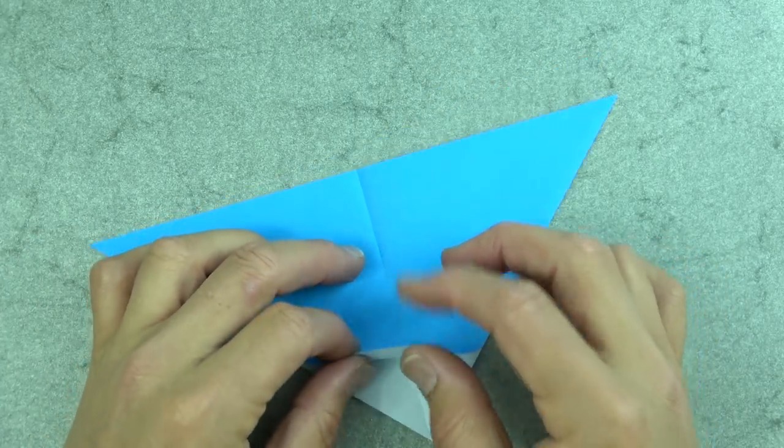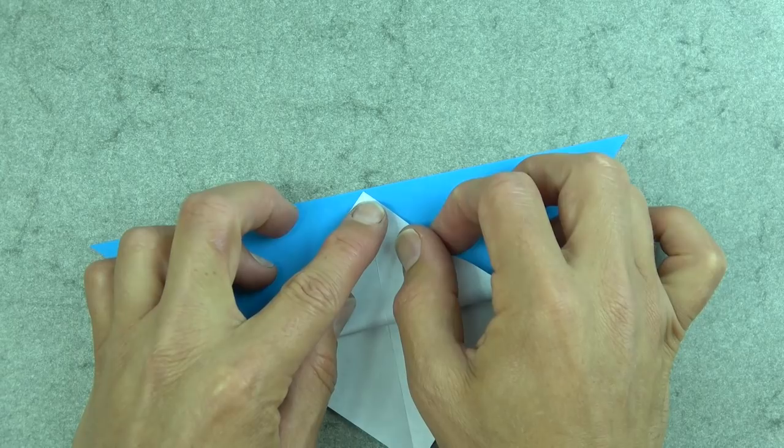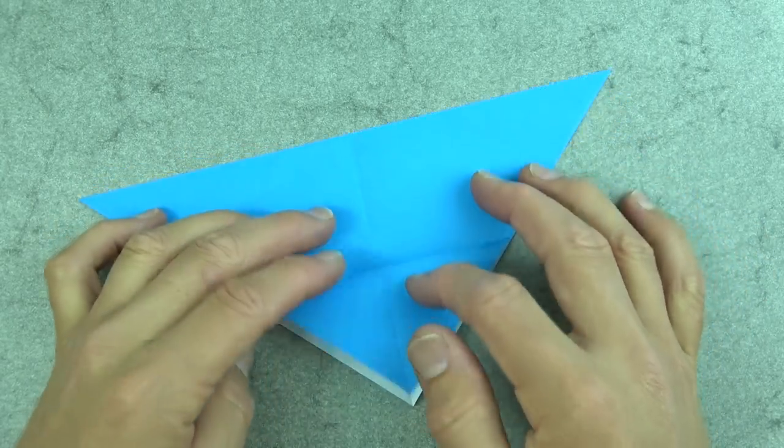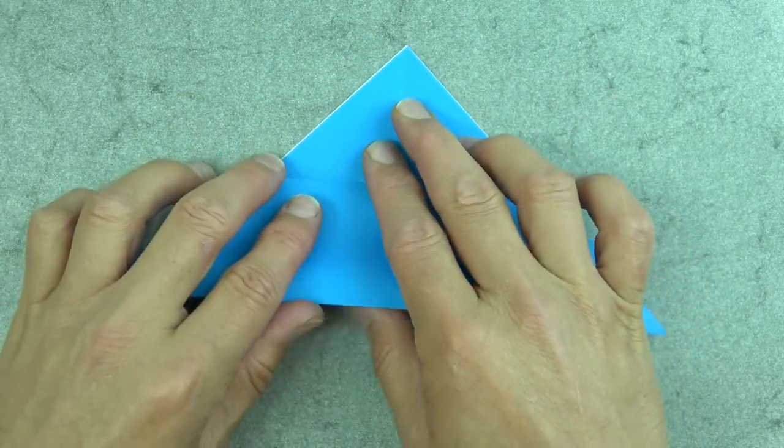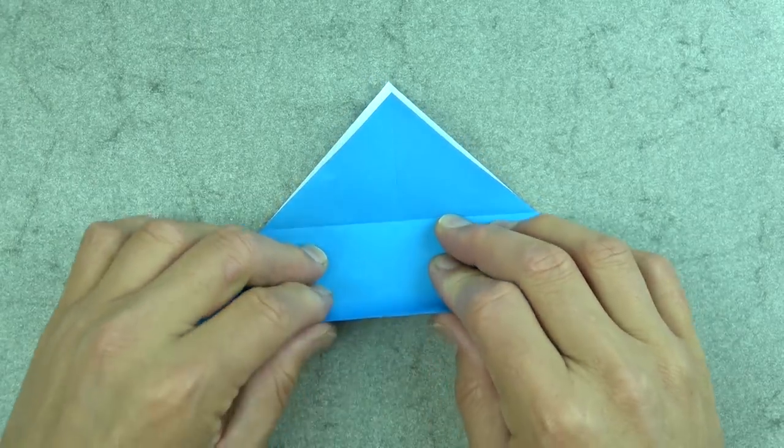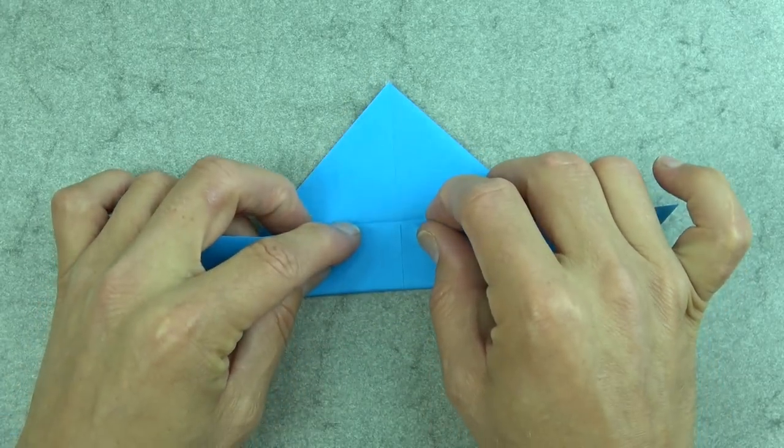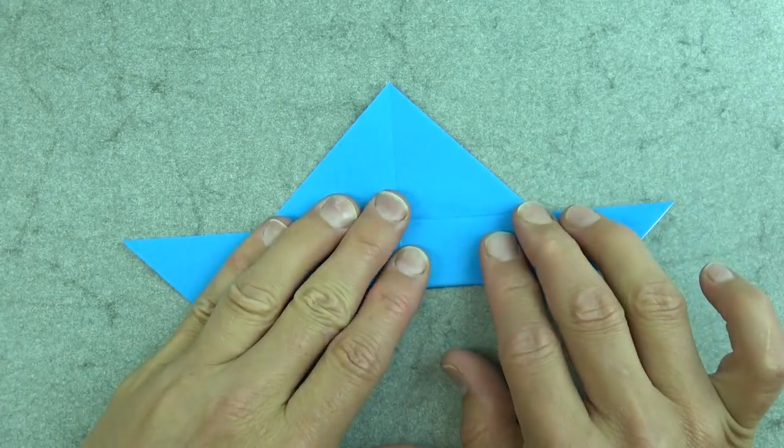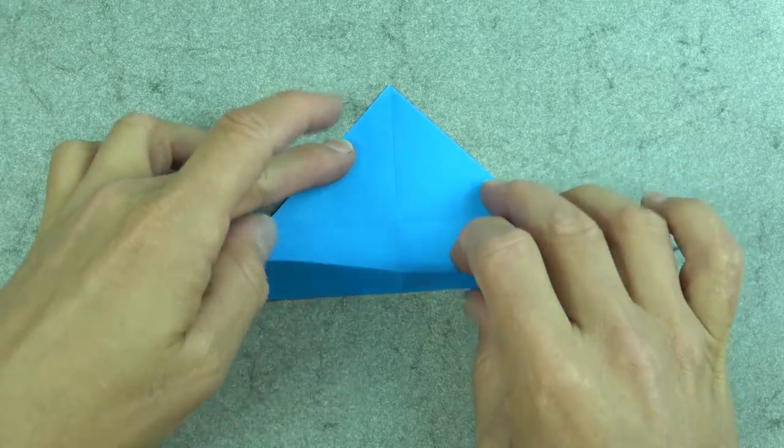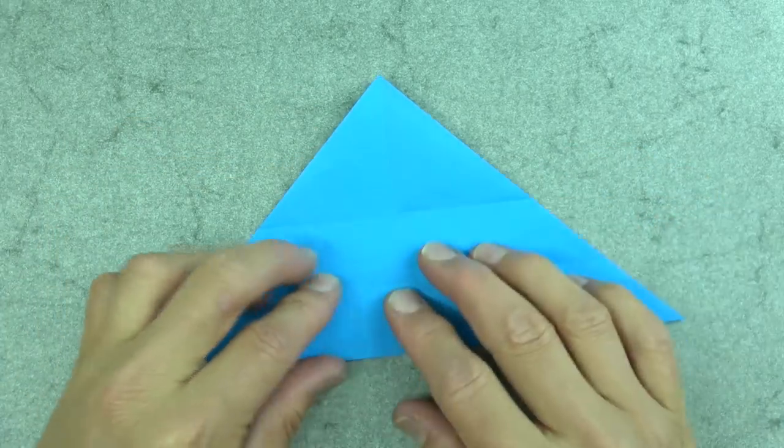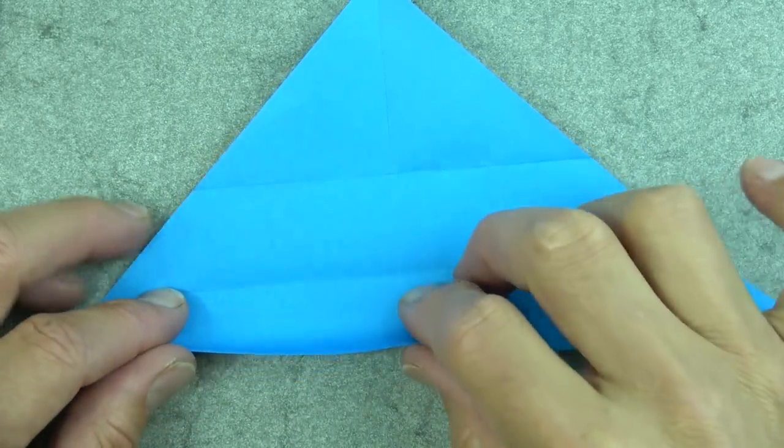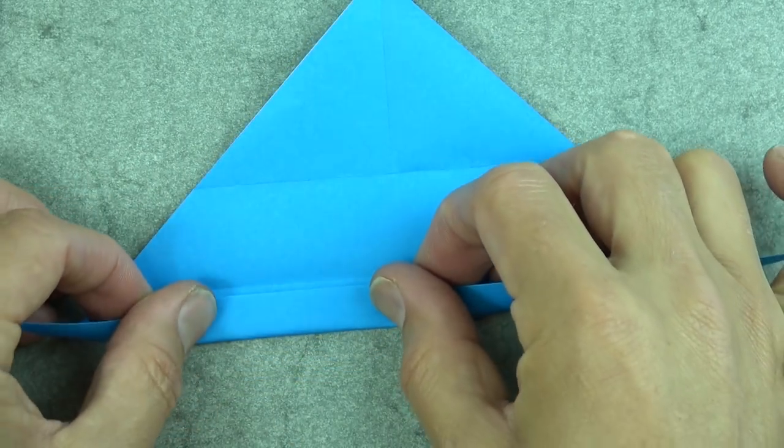Now fold the front flap to this point. And now fold this edge to the crease and hold the layers down so that they don't slide. And unfold. And now fold this edge to the new crease, but don't fold it exactly to the crease. Leave about a half a millimeter.